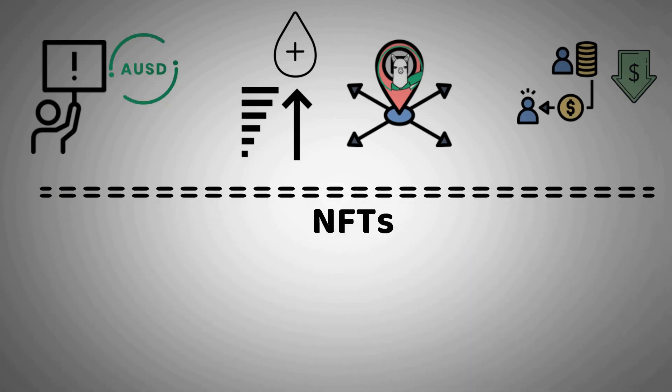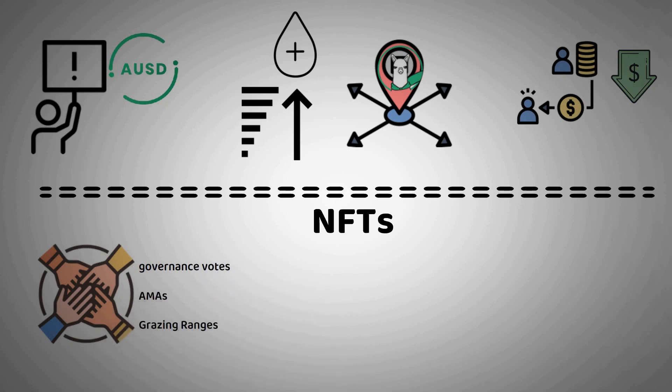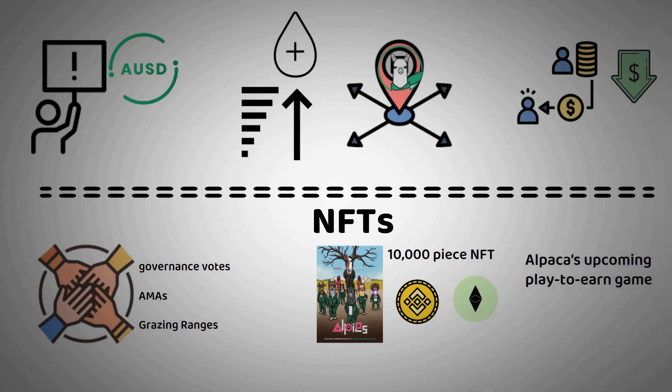NFTs. Alpaca uses its fairly sizable NFT collection to reward participation and governance votes - AMAs, grazing ranges, etc. In early November, Alpaca launched Alpies, a 10,000 piece NFT collection on both the BNB chain and ETH. Alpies will be used as heroes in Alpaca's upcoming play-to-earn game.